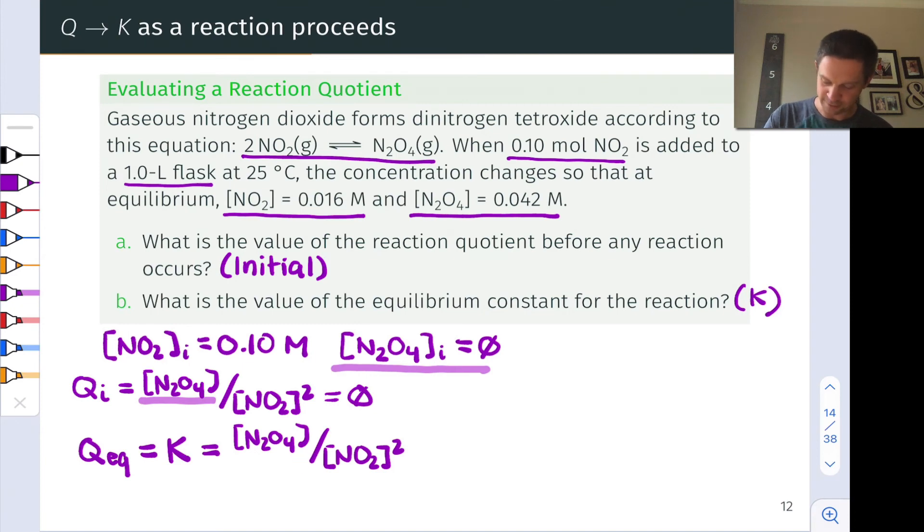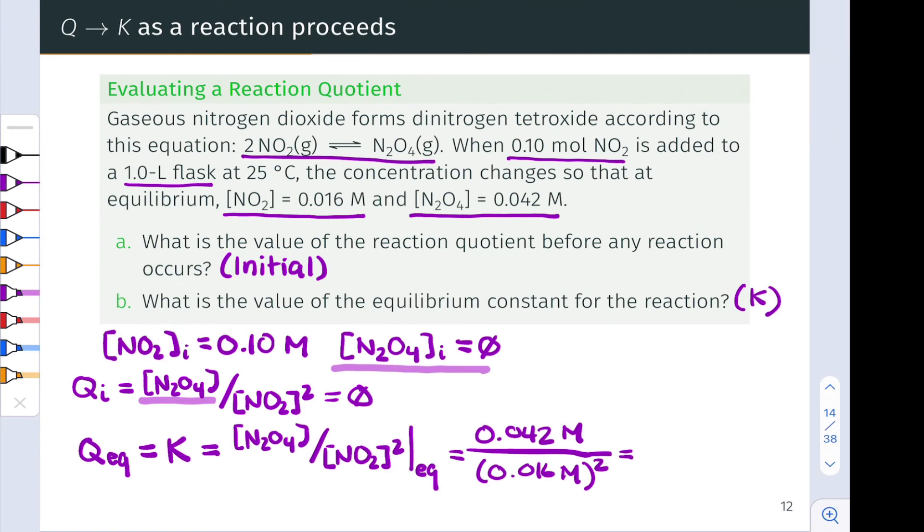And then the last thing I'm going to do is add evaluated at equilibrium, which we know from the problem. And so from the problem statement, we can extract that the N2O4 concentration is 0.042 molar. And the NO2 concentration at equilibrium is 0.016 molar. And we're going to square that since the reaction quotient expression tells us to do so.